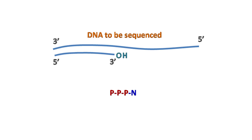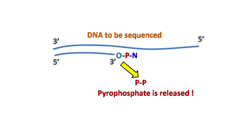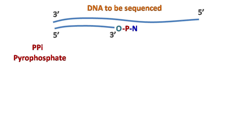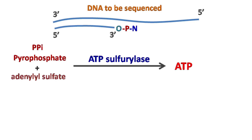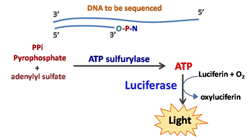When a dNTP is added on the template DNA, pyrophosphate is released. The pyrophosphate can be converted into ATP by the enzyme ATP sulfurylase. The ATP can be further utilized by luciferase enzyme to generate light. This is the same enzyme that generates light in fireflies.